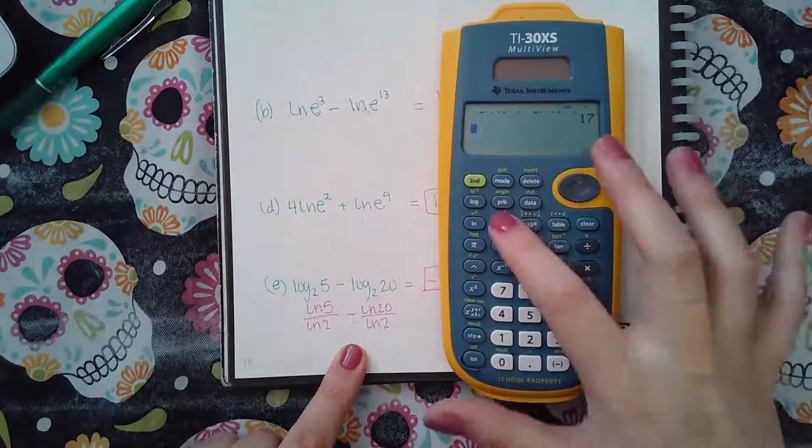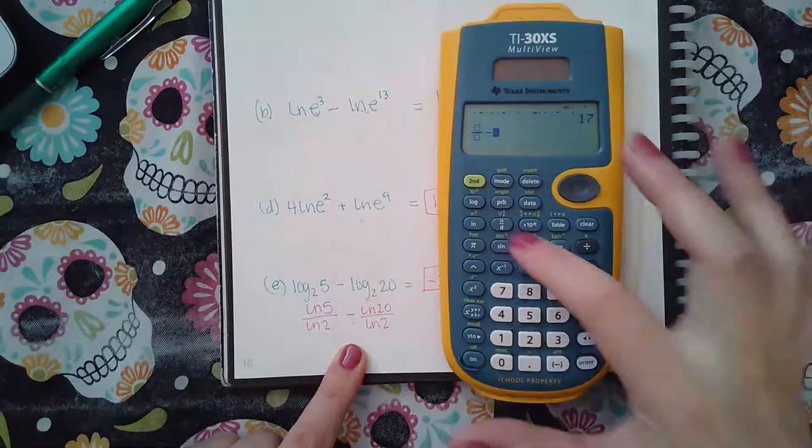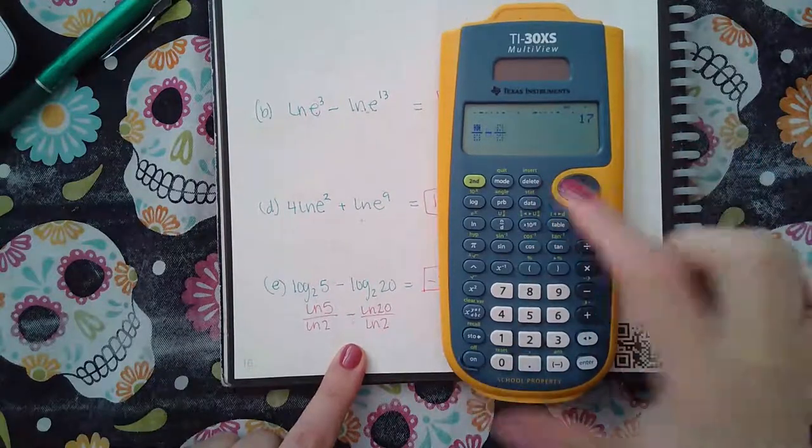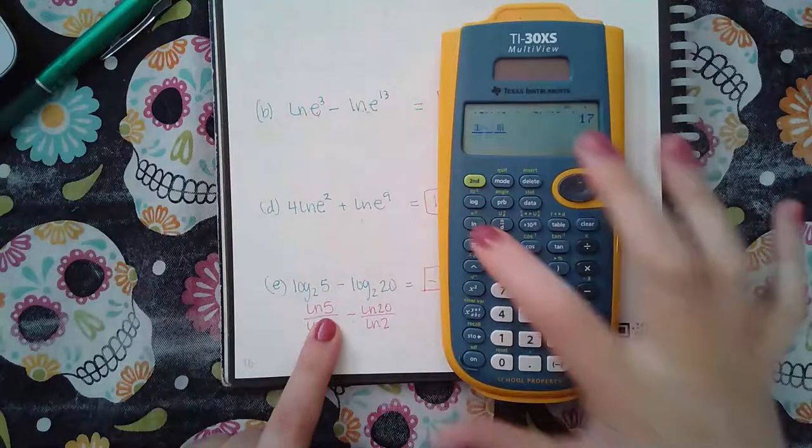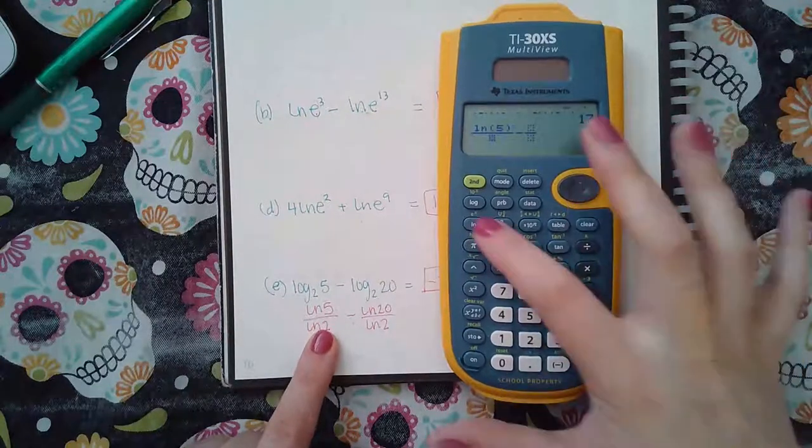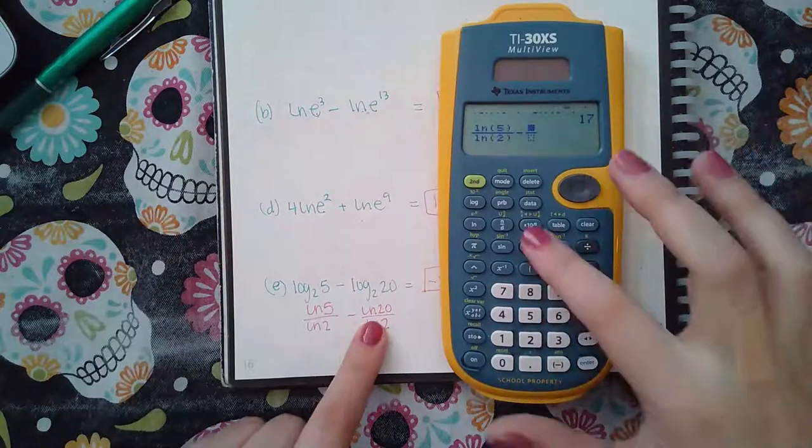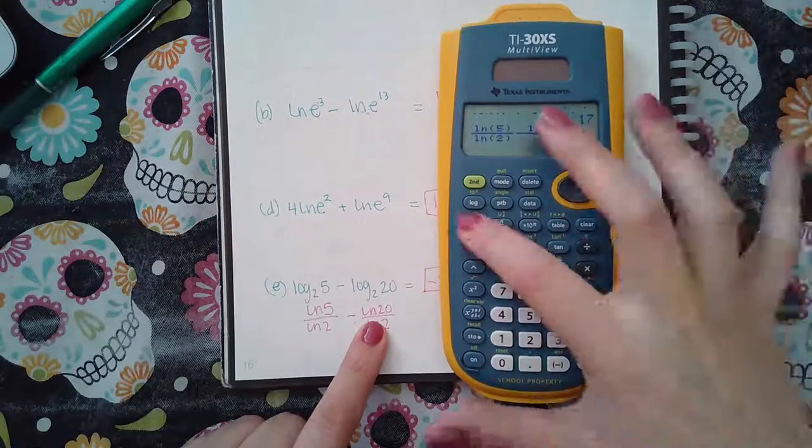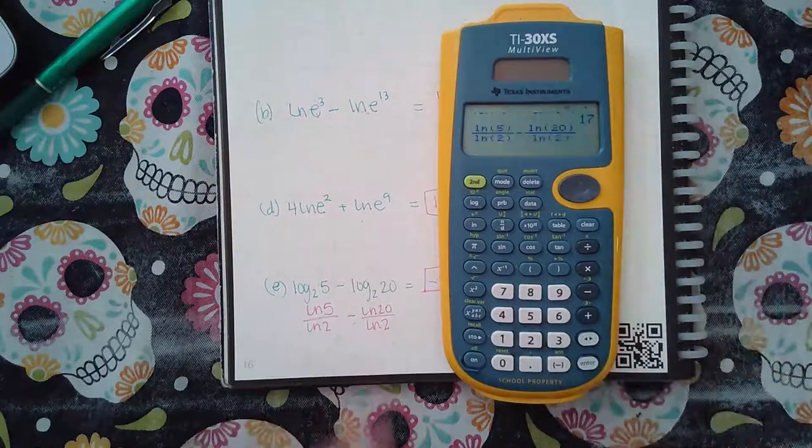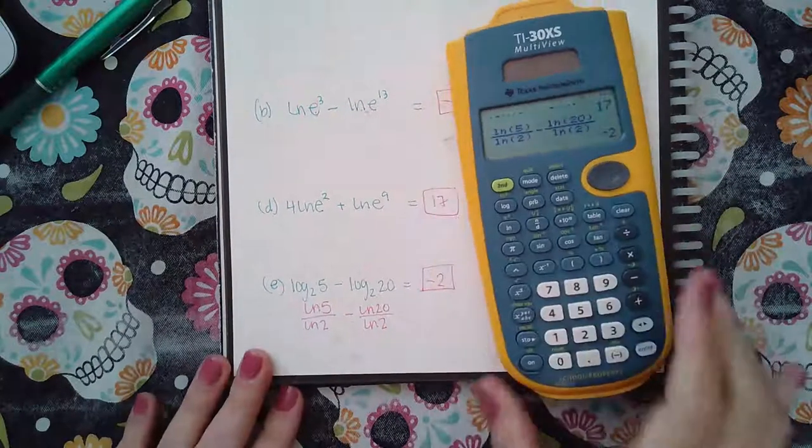So clear, fraction, minus fraction. Just set up the template. Now I'm going to plug everything in. ln of five, close the argument, ln of two, close the argument. Come over to here. ln of 20, close the argument, ln of two, close the argument. You get negative two.